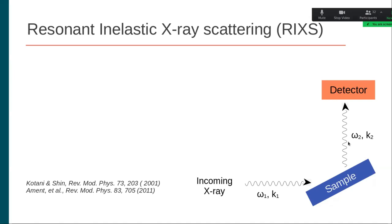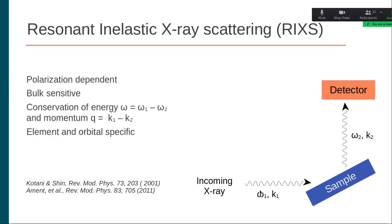It is important to highlight that this technique is dependent on polarization. By changing the angle of the sample, we can change the polarization of the incoming photon, and it also depends on the polarization of the outgoing photon. Since we are working in the X-ray regime — soft or hard X-rays — this technique provides bulk information because these rays can penetrate quite deep into the sample. Because it is inelastic scattering, there is some transfer of energy from the incoming photon to the sample, and of course there is conservation of energy and momentum throughout the whole process.